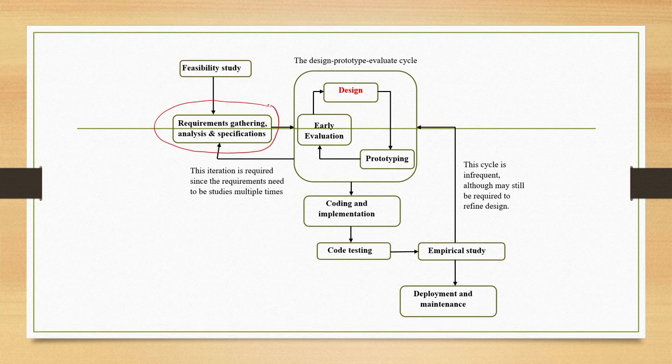Before we start, we will have a quick look at the Interactive System Development Life Cycle and where we stand. As you may recollect in an Interactive System Development Life Cycle, there are several stages. We have Requirement Analysis, Gathering and Specification Stage.